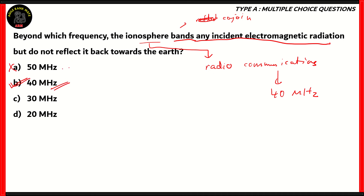50 MHz is more than 40, which is where you would need to be reflected by satellites. So those forms of electromagnetic radiation — like television and the internet — would have to be reflected by satellites. Options C and D, 30 and 20 MHz, are incorrect because radio communicators can operate up to a maximum of 40 MHz, so 30 and 20 are not the maximum frequency at which the ionosphere reflects radiation back towards Earth.